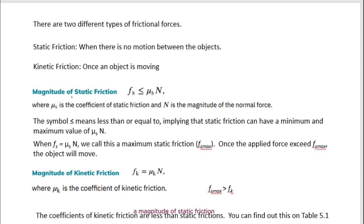The magnitude of static friction is calculated with this equation here. Static friction is less than or equals to mu s times n, where mu s is the coefficient of static friction, and n is the magnitude of the normal force. The symbol means less than or equals to.